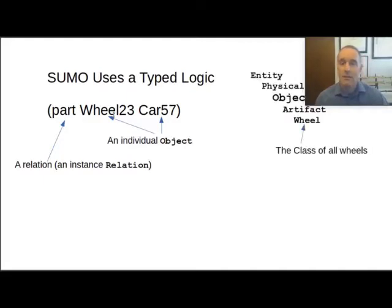Now if we look at the class hierarchy for the class wheel, you can go into the Sigma knowledge engineering environment and take a look and get a graph of the hierarchy. You can see that wheel is a subclass of artifact, which in turn is a subclass of object. That's the most important thing here because part is defined as having requirement that both of its arguments are instances of class object. An object is also a physical and physical is a subclass of entity, the class of all things in SUMO.